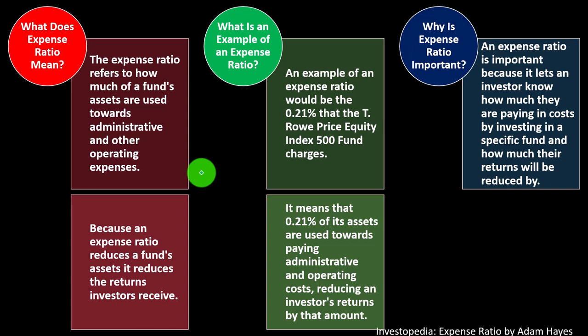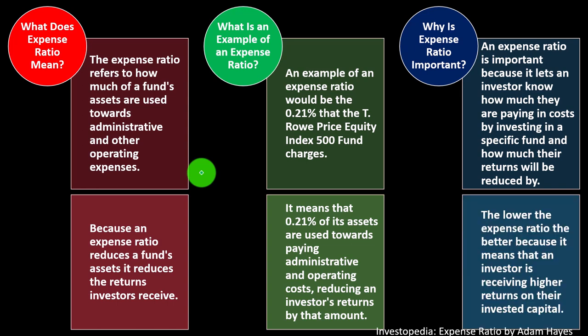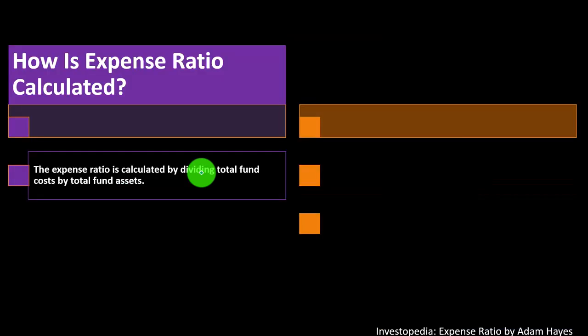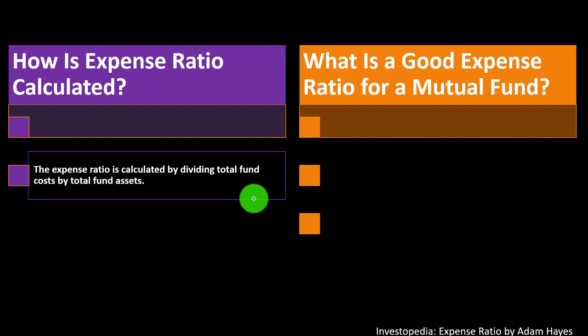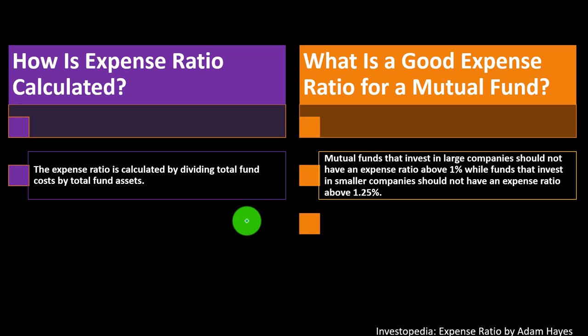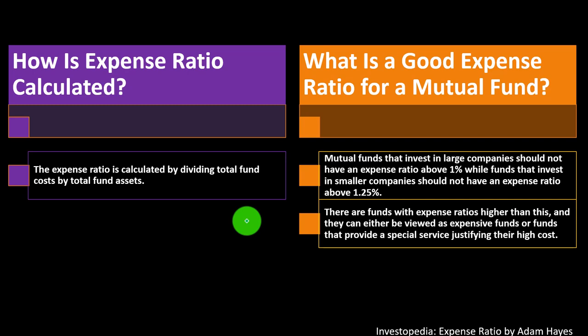An expense ratio is important because it lets an investor know how much they are paying in costs by investing in a specific fund, and how much their returns will be reduced. The lower the expense ratio, the better, because it means the investor is receiving higher returns on their investment capital. The expense ratio is calculated by dividing total fund costs by total fund assets. Mutual funds that invest in large companies should not have an expense ratio above 1%, while funds investing in smaller companies should not exceed 1.25%.